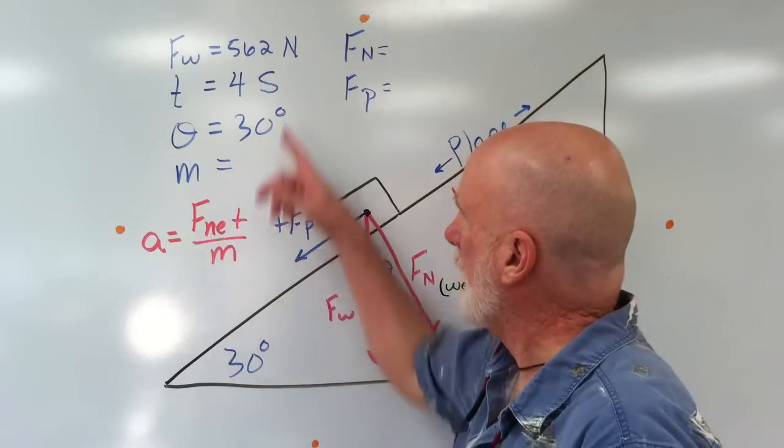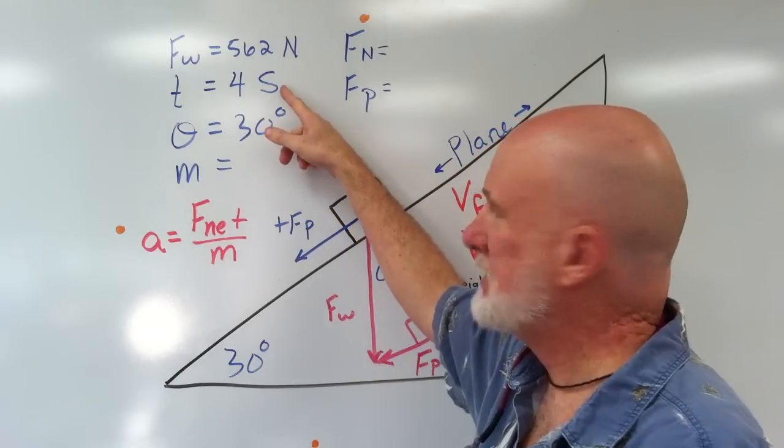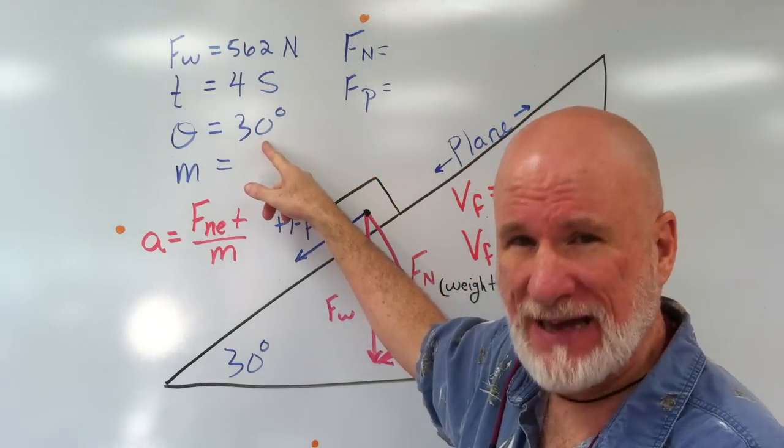Now, I've been given Fw, T, theta is 30 degrees. I have to find the mass because I need the mass to find the acceleration.